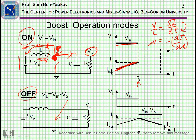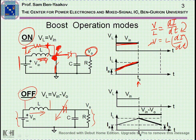This will bring us to the state in which the switch is off, current is flowing, and the diode is passing the current. In this case, the voltage imposed on the inductor is also constant — it's the difference between V in and V out. V out is higher than V in; we'll discuss it in a minute.